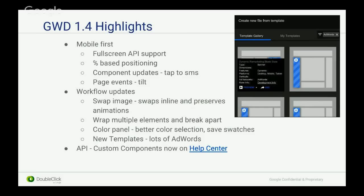So one thing — we have swap images. You can swap inline and preserve animations in the timeline. Wrap multiple elements and break them apart. On the color panel, we've been working to make that easier to use, so you have better color selection and can save swatches. A big part of GWD is helping this transition — we've created new templates, and a lot of them are AdWords. We really want to make that integration smooth, and it's one of the benefits of GWD that you can work with all the DoubleClick products. From Studio to AdWords, you can directly upload your creatives. GWD shows you both the raw file size and the compressed file size — that's what will get served. And the API for custom components is now in the Help Center.